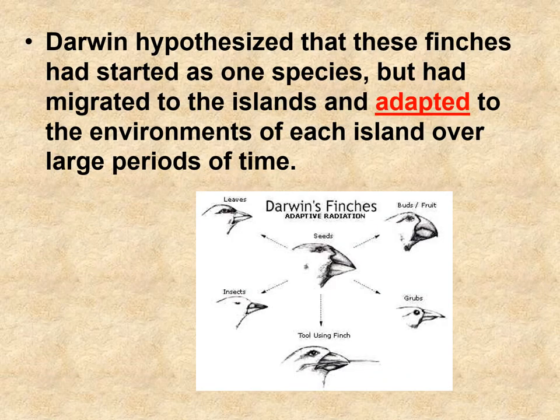Darwin hypothesized that these finches had started as one species but migrated to the islands and adapted to the environments over time. They didn't say 'I need to adapt.' Let's just say a storm blew a bunch of birds over to the island, and the islands are far enough away that they can't fly back home — but due to the wind of the storm, they ended up on this island.